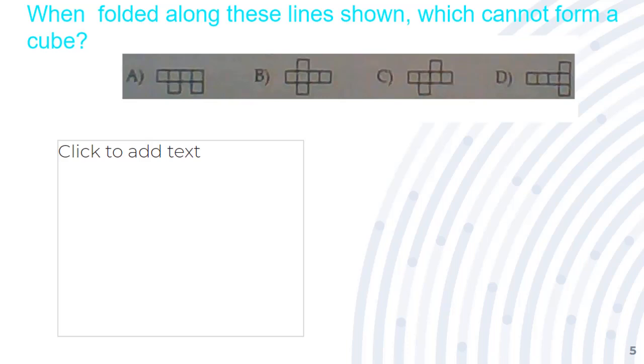A has 2 cubes right on that one side together. Those would go over each other, so that wouldn't work. And our answer would be A, because that's the only shape that cannot form a cube.